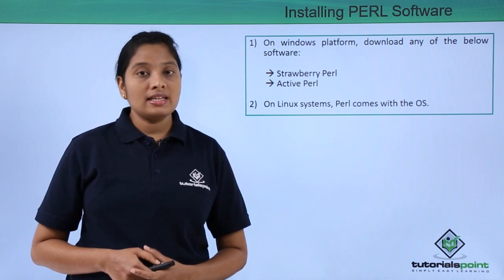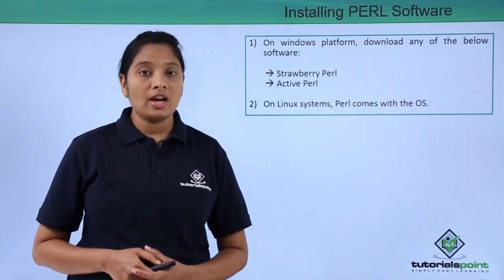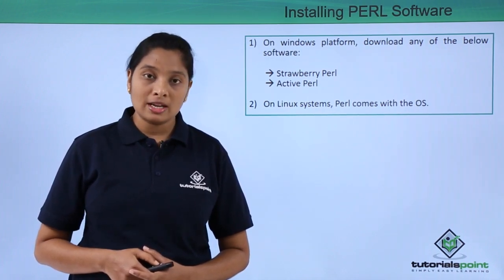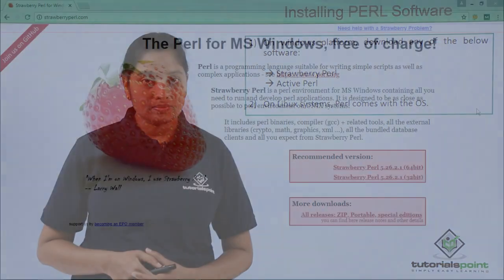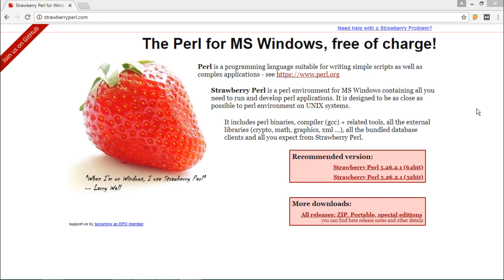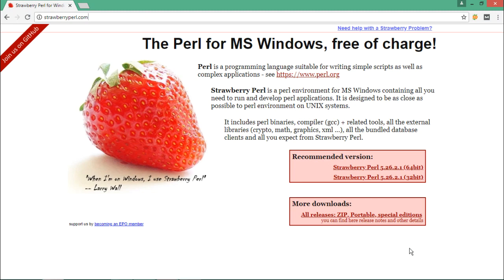Now let us see the installation and try to run a small script on Windows. Download Perl software from strawberryperl.com and install it.